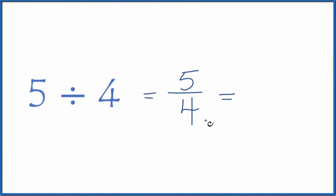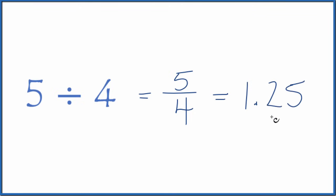On a calculator, if you divide 5 by 4, you get 1.25. So that makes sense. 5 divided by 4 equals the fraction 5 fourths, or 1.25.